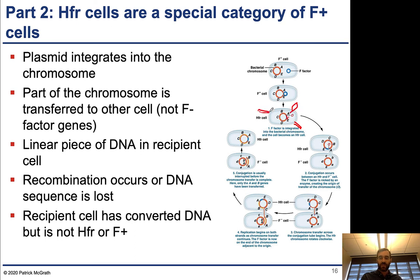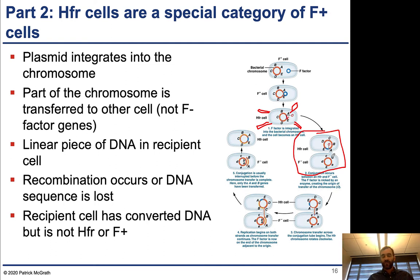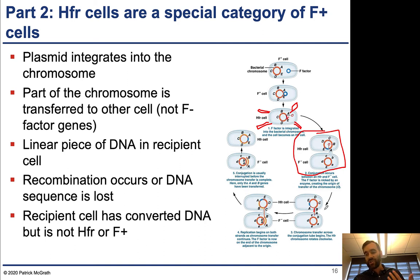When an Hfr cell comes into contact with an F- cell, a conjugate is formed, the bridge is produced, but now the origin of transfer is attached to the entire chromosome. You are still transferring a single strand of DNA into the new cell, but you're not just doing the plasmid DNA — you're doing the chromosomal DNA adjacent to the integration site. These genes are designated by letters A, B, C, D, and E — just some random genes on the bacterial chromosome.